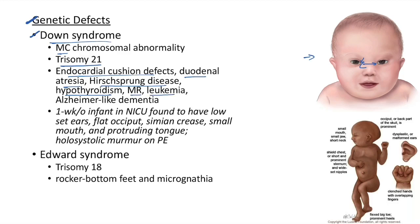Clinical case: one-week-old infant in NICU found to have low-set ears, flat occiput, small mouth, and protruding tongue. There is a holosystolic murmur on physical examination. This holosystolic murmur can be due to ventricular septal defect seen in Down syndrome. Down syndrome is also associated with leukemia and Alzheimer-like disease.